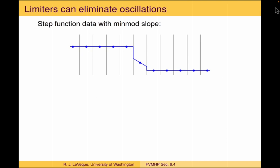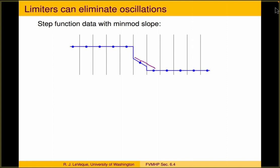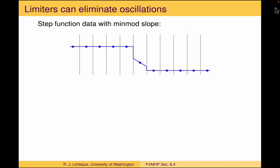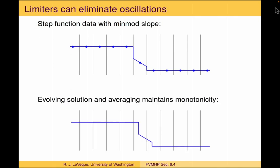If we have some cell averages denoted by the dots here and then we do a reconstruction with slopes in each cell chosen with this min-mod function — we look at the one-sided slopes on either side and take the one that's smaller — in this cell we would be taking a slope based on the slope looking to the right, which is smaller than the slope looking to the left. In all the other cells, when we look one direction or the other, we get zero slope. If we evolve that initial data with the advection equation for one time step and average it back onto the grid, we'll have a method that preserves monotonicity and that is total variation diminishing for arbitrary data.